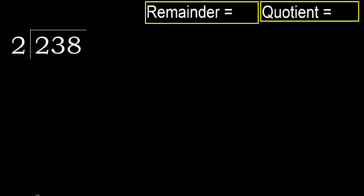238 divided by 2. 2 is not less, therefore, start with 2. 2 multiplied by which number is nearest to 2, but not greater?